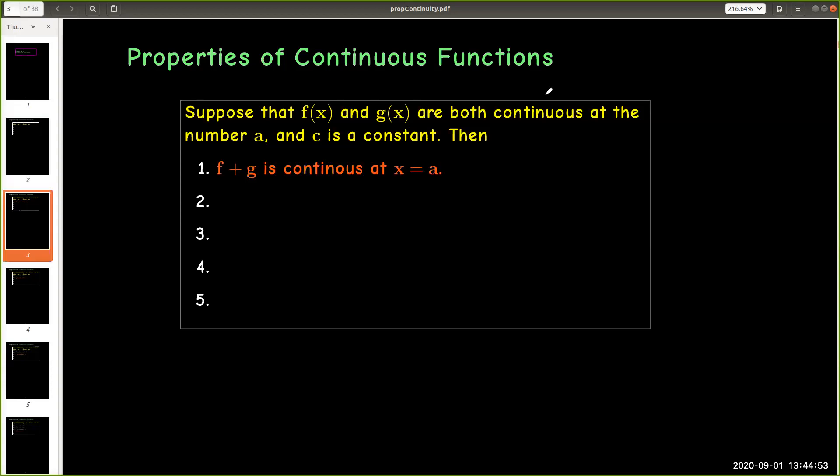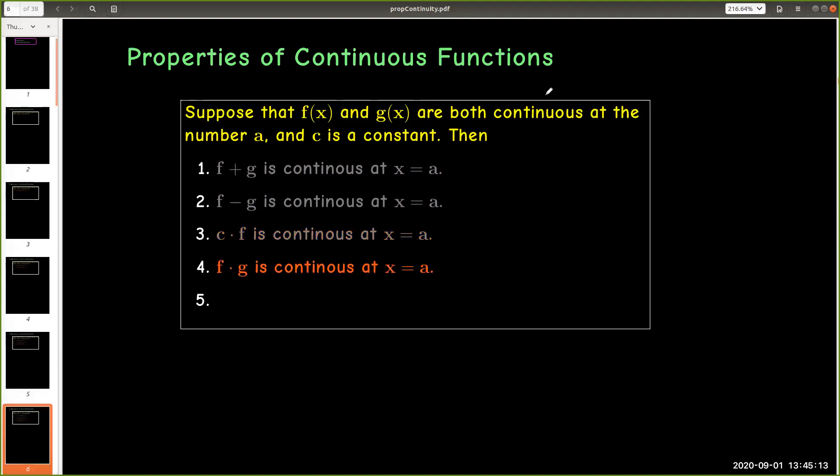The sum of continuous functions is continuous. The difference of continuous functions is also continuous. If I take a continuous function and multiply it by a constant, I still have a continuous function. The product of continuous functions is continuous. And the quotient of continuous functions is also continuous provided that the denominator is not equal to zero.